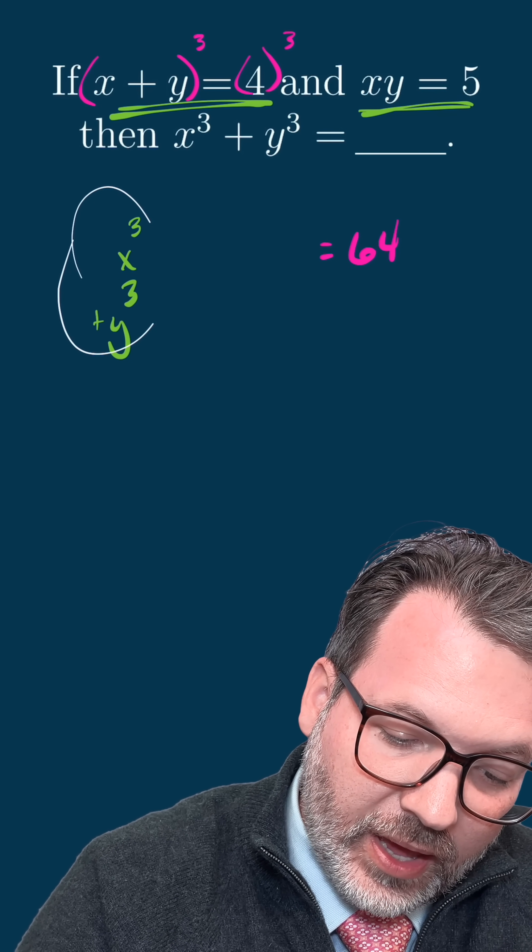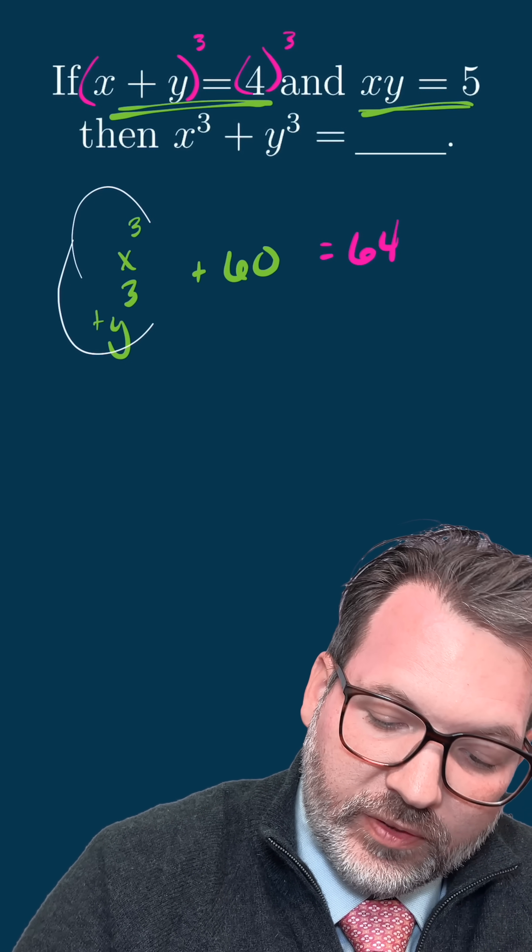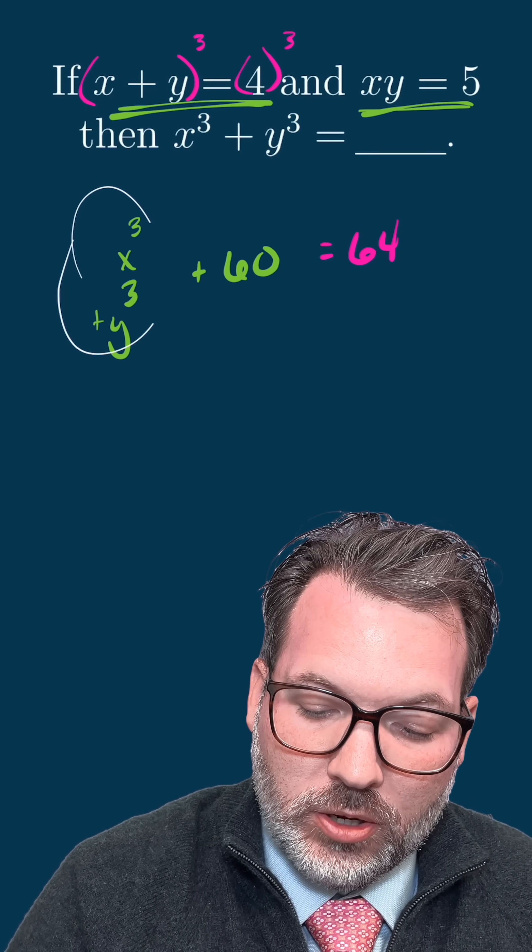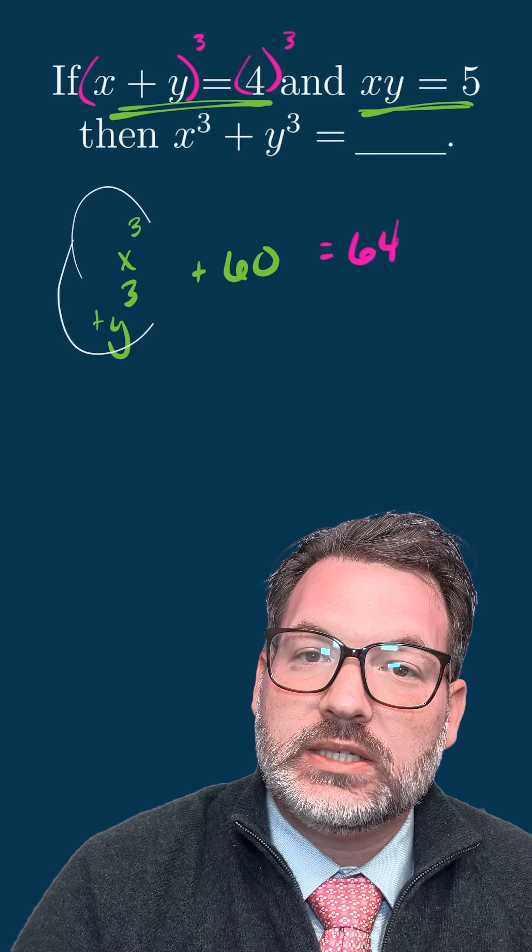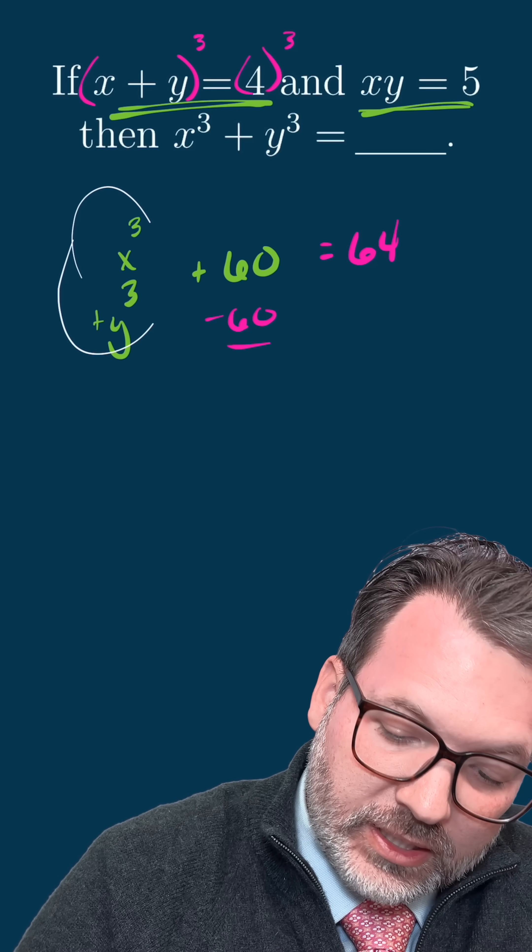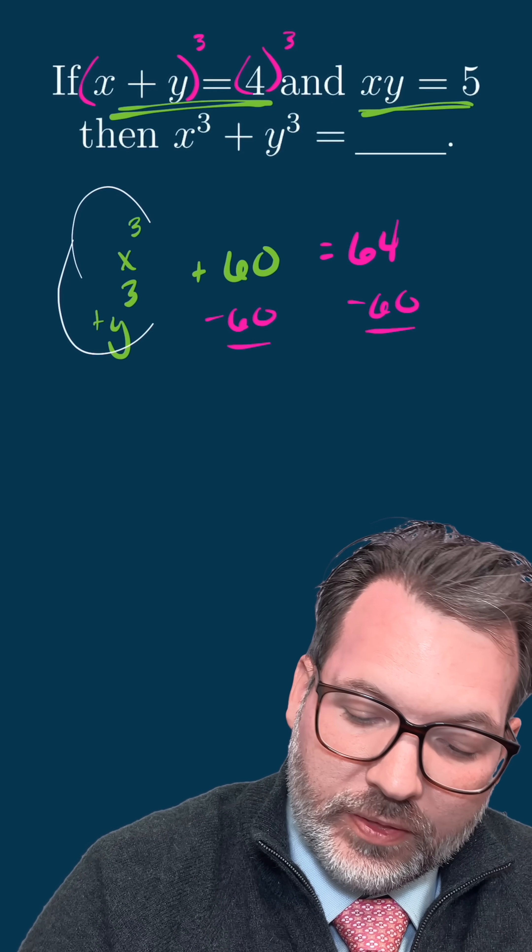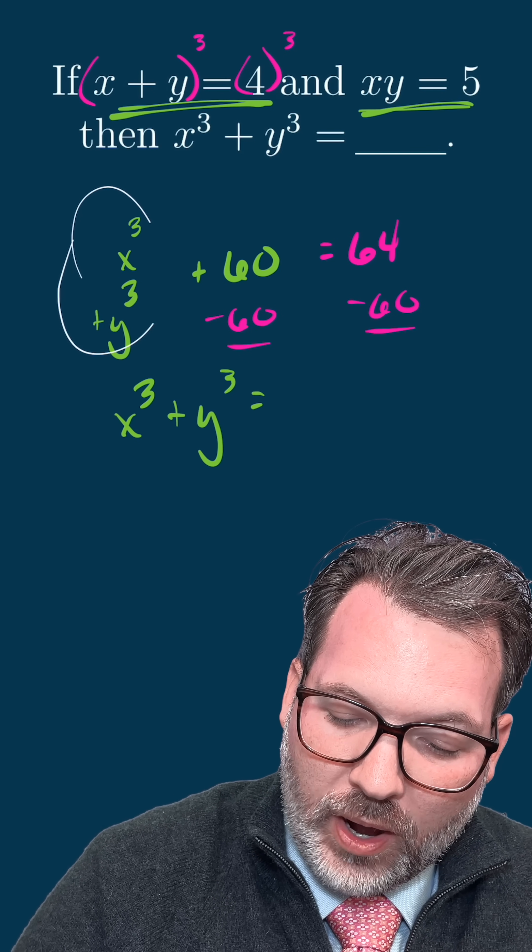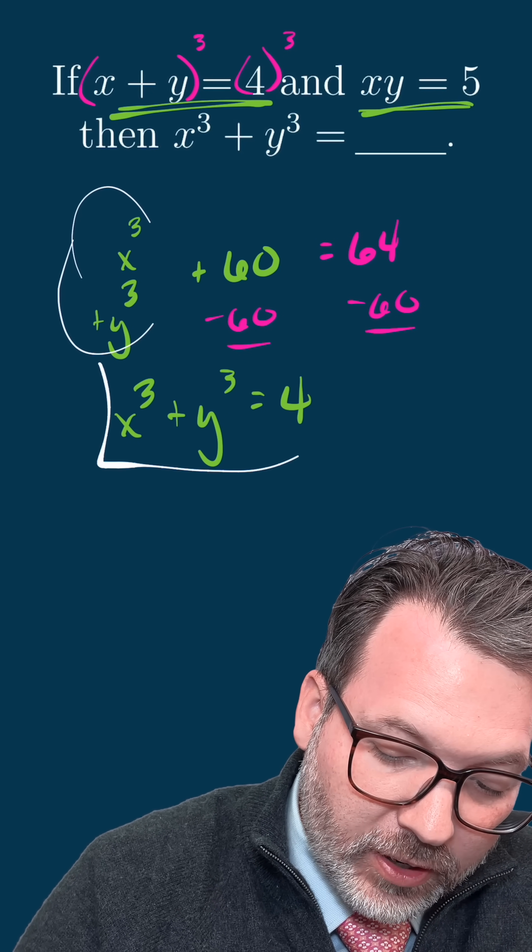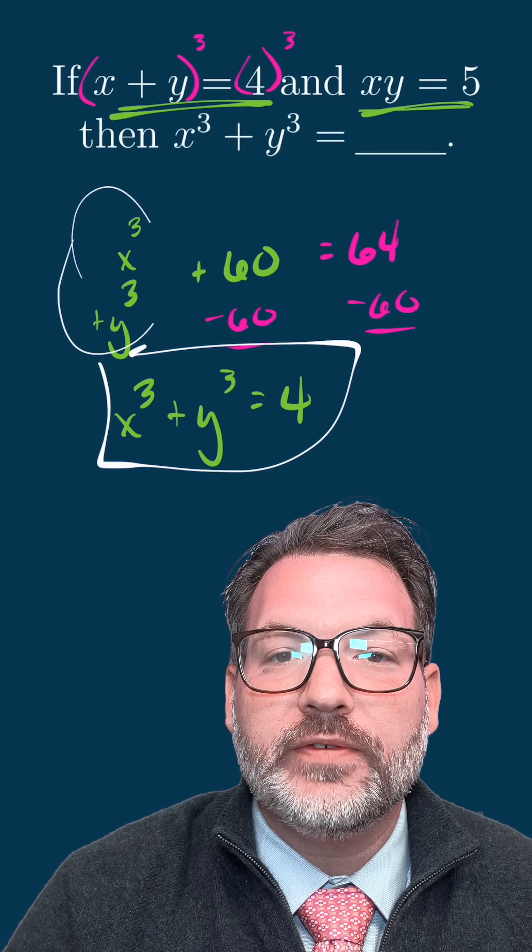Well, if we replace all of that with 60, it's relatively easy to see x cubed plus y cubed plus 60 is 64, subtract 60 on this side, subtract 60 on this side. And there you have it, x cubed plus y cubed on their own, just by a coincidence must also be four.